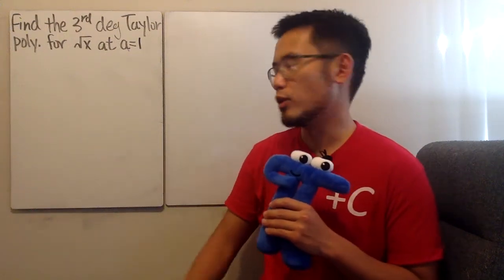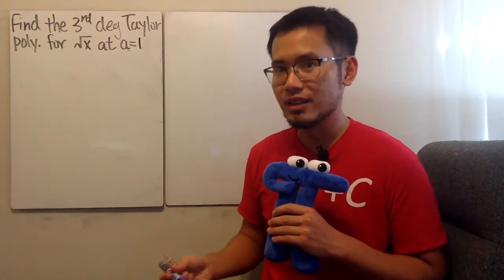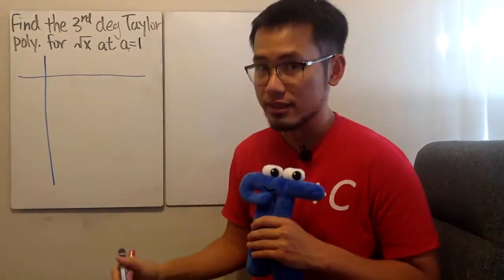Okay, we are going to find the third degree Taylor polynomial for square root of x at a equals 1. We will use the Taylor formula. Here we go. And we don't have to do it all the way, because we are just on the third degree.